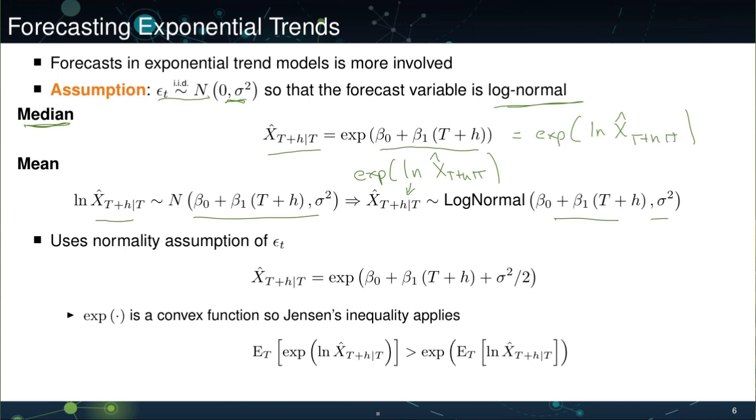The alternative method uses the mean. In particular, it exploits this relationship that I just mentioned, that if the log of x hat is normally distributed, then x hat itself is log normally distributed. We know that the mean depends on the mean parameter, beta naught plus beta 1 t plus h, but it also depends on half the variance. So we have to inflate the mean by this term. This happens of course because the exponential is a convex function, and Jensen's inequality will tell us that the expectation of the exponential is larger than the exponential of the expectation.